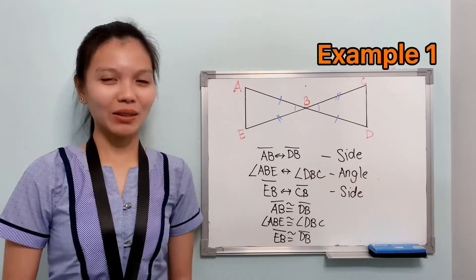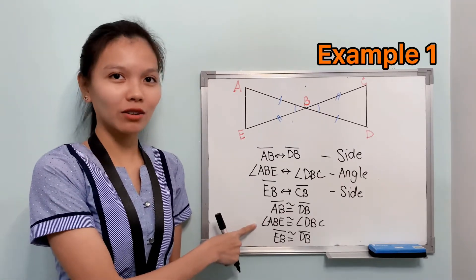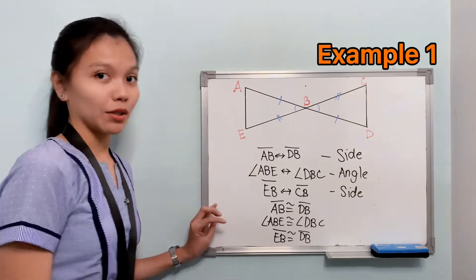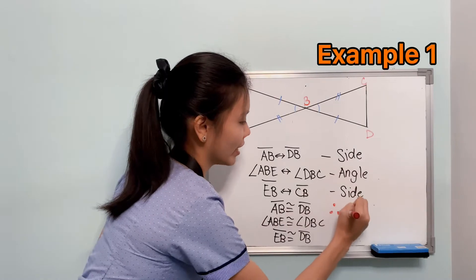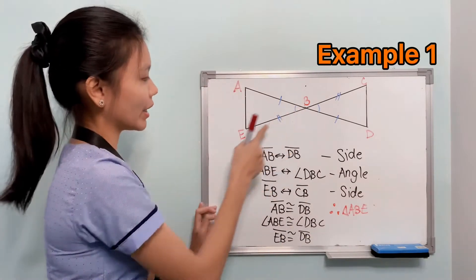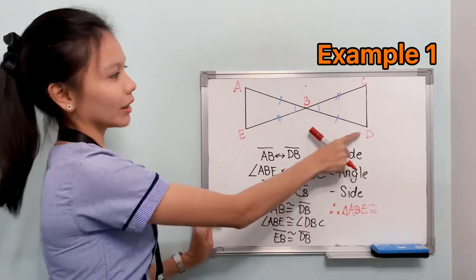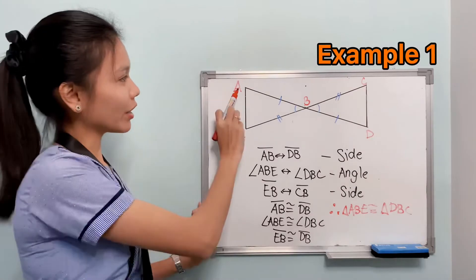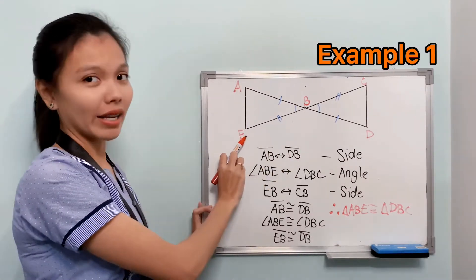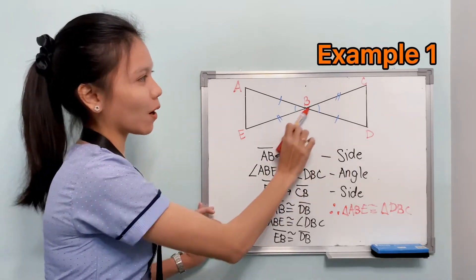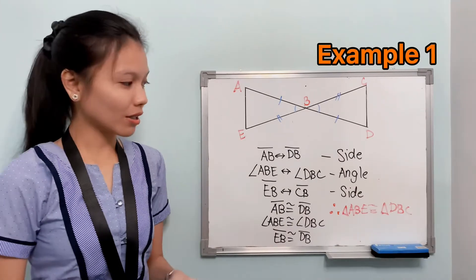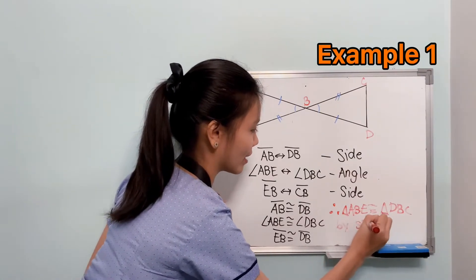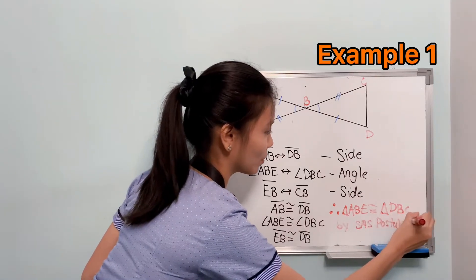From these corresponding parts, we can say they are congruent to each other. So line segment AB is congruent to line segment DB, angle ABE is congruent to angle DBC, and line segment EB is congruent to line segment CB. The given angle is an included angle because it is found between the two pairs of named congruent sides. Therefore, triangle ABE is congruent to triangle DBC, by the SAS postulate or SAS congruence postulate.